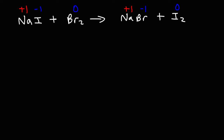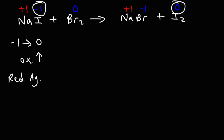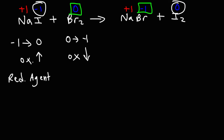With this information we can find the answer. The oxidation state of iodide changes from negative one to zero — that's an increase, the oxidation state went up — which means sodium iodide is the reducing agent because it was oxidized. For bromine, the oxidation state went from zero to negative one, which is a decrease. Because the oxidation state went down, bromine was reduced, which makes it the oxidizing agent.